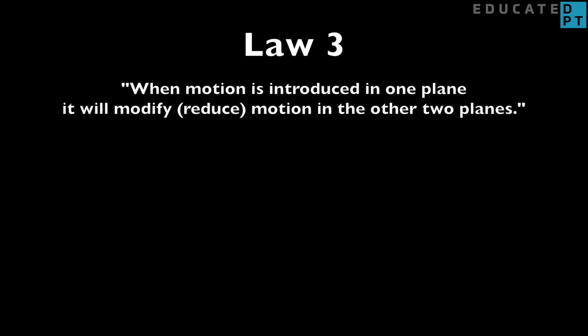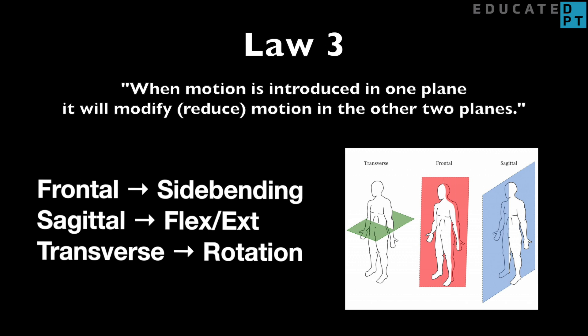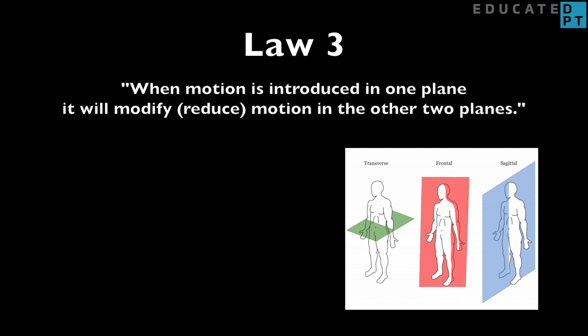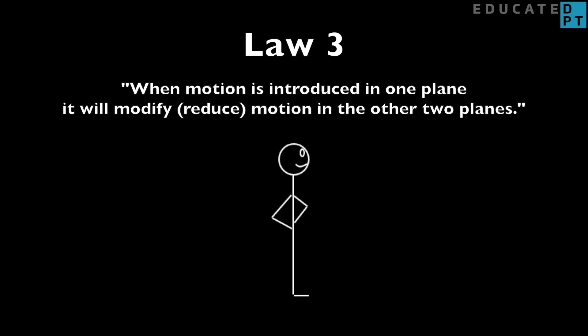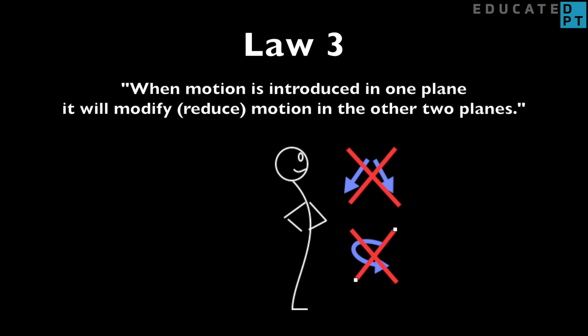Law 3. When motion is introduced in one plane, it will modify or reduce motion in the two other planes. The planes this law is referring to are the frontal, sagittal, and transverse planes, which make up the movements of side bending, flexion and extension, and rotation respectively in the spine. Simply put, this law states that if you move in one plane of motion, such as flexion or extension, the other two planes of motion — rotation and side bending — will not occur as much.